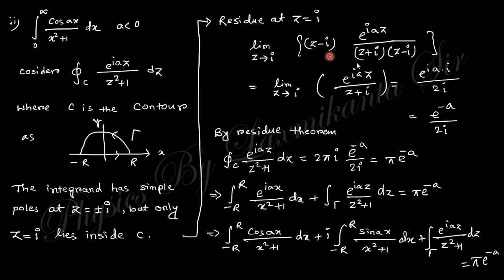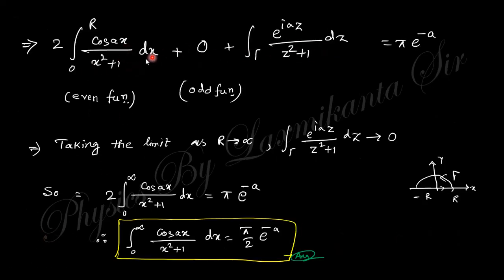By the residue theorem, the contour integral equals 2πi times the sum of residues. Splitting the contour integral into two parts — the real axis integral from −R to R, and the gamma (semicircular) arc — and as R → ∞ the integrand splits into cosine (even function) and sine (odd function) parts. Since the limits are symmetric, the sine integral vanishes, and the cosine integral equals twice the integral from 0 to ∞.